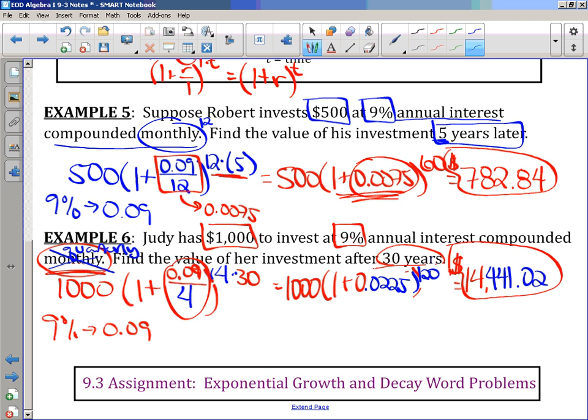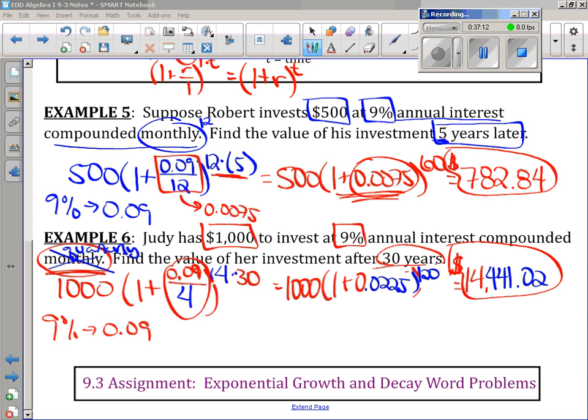So, your assignment is the Exponential Growth and Decay Word Problem Worksheet. And so depending on where class is, you might have some time to work on that now, but next class period you should have some time to keep working on it. So, hopefully this video got you what you needed and should be good to go. I'll see you next time.